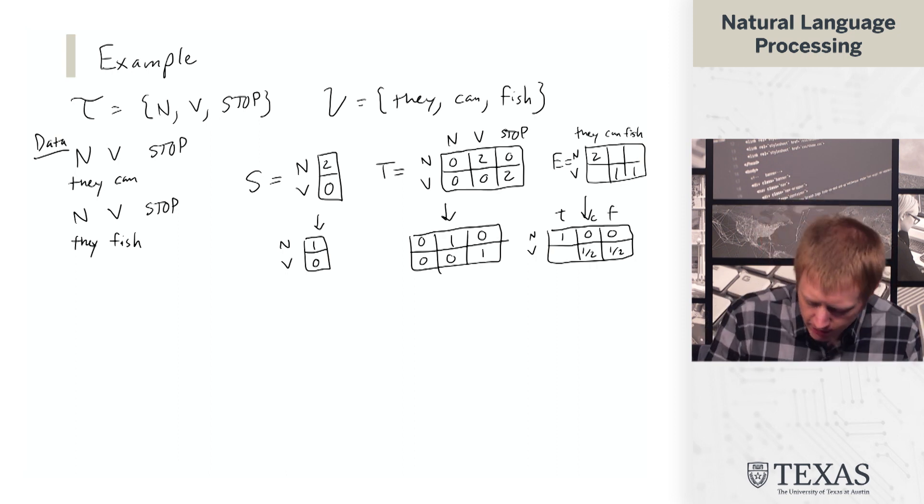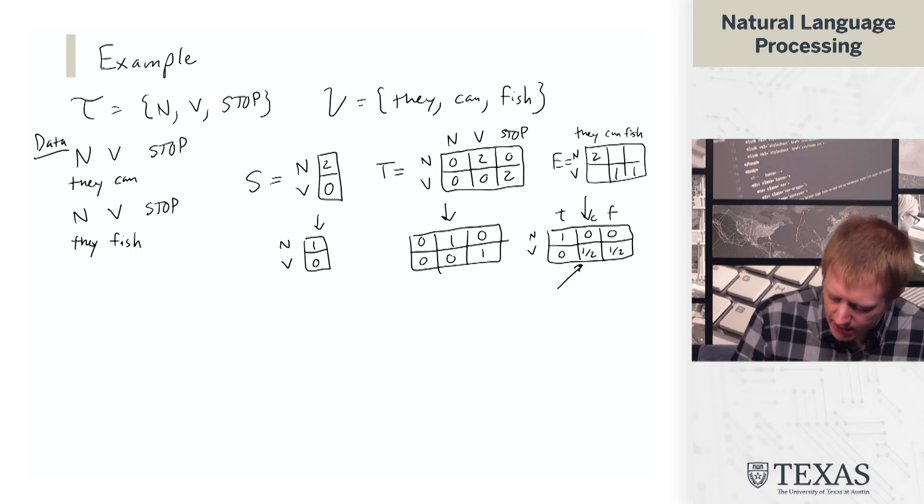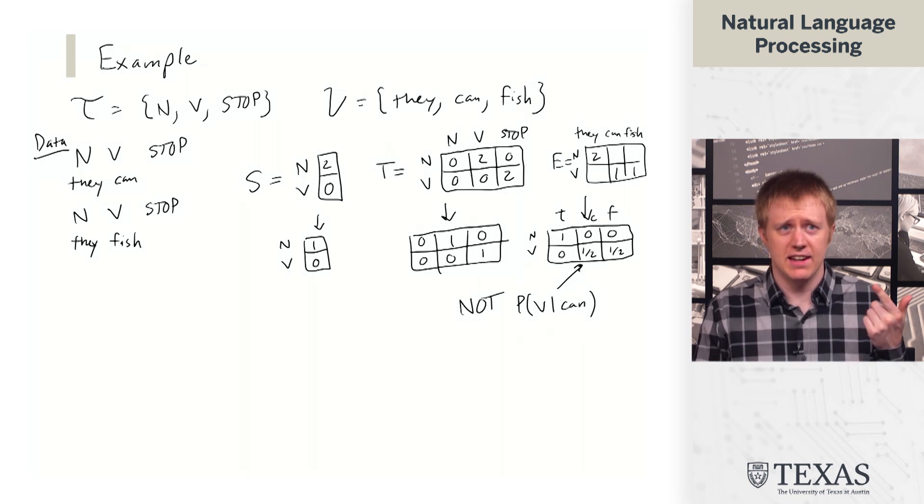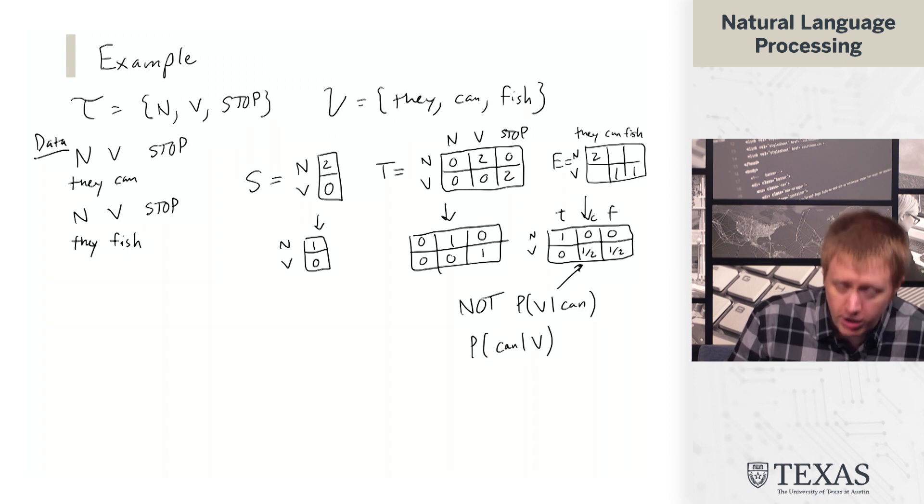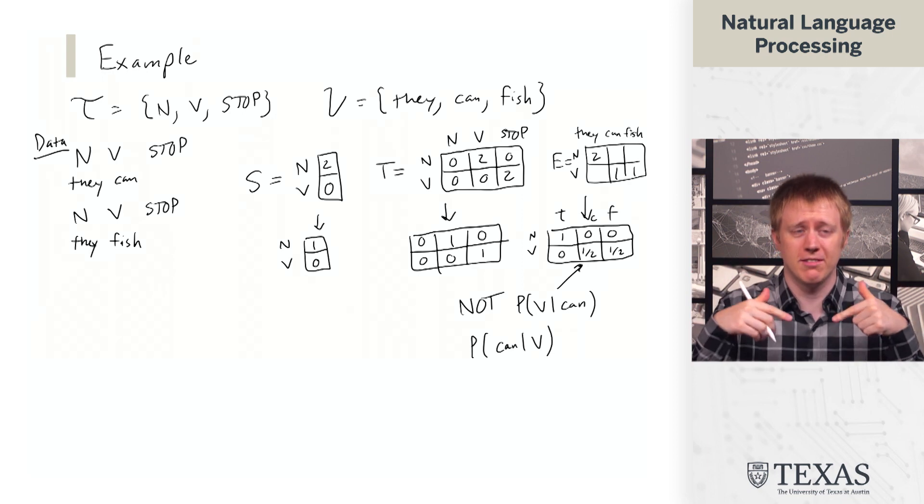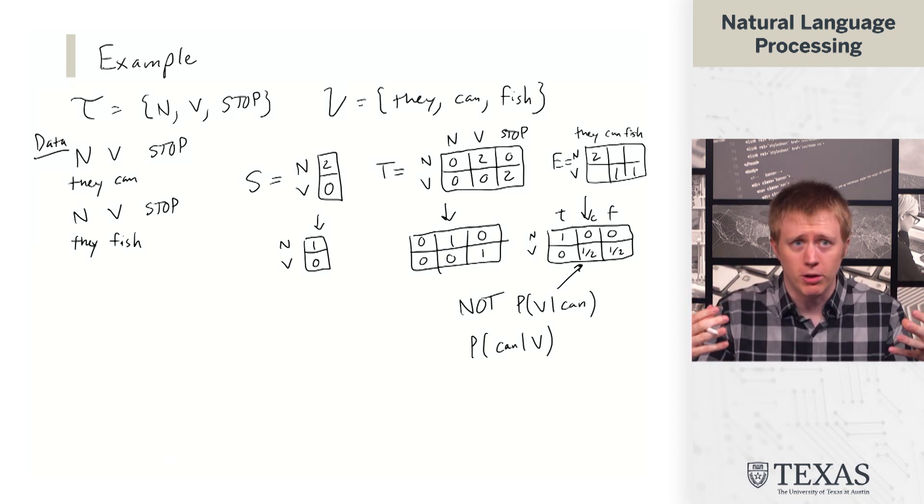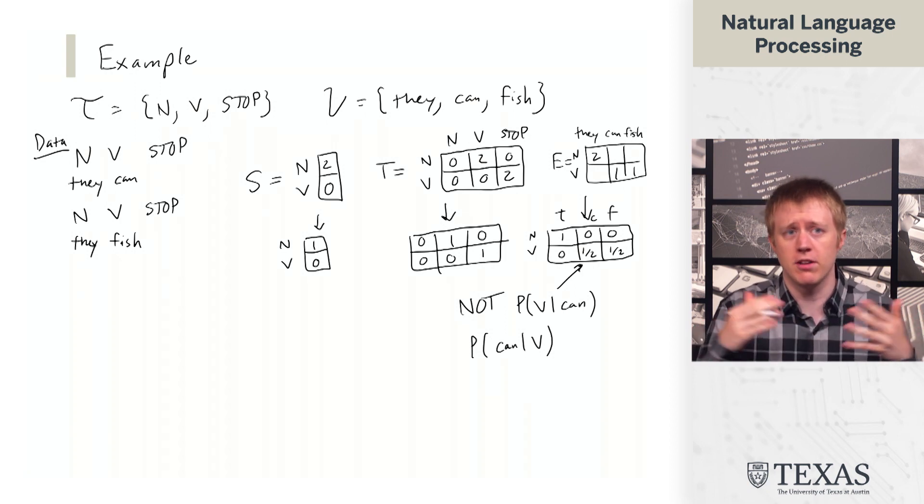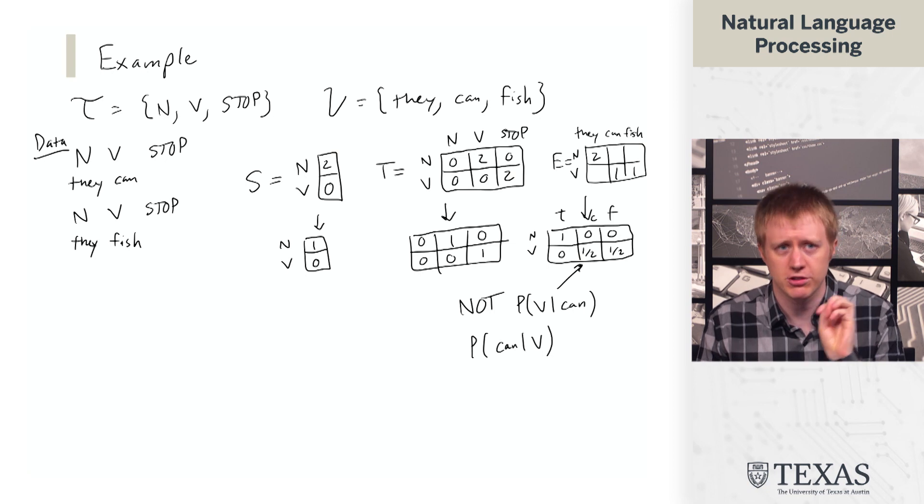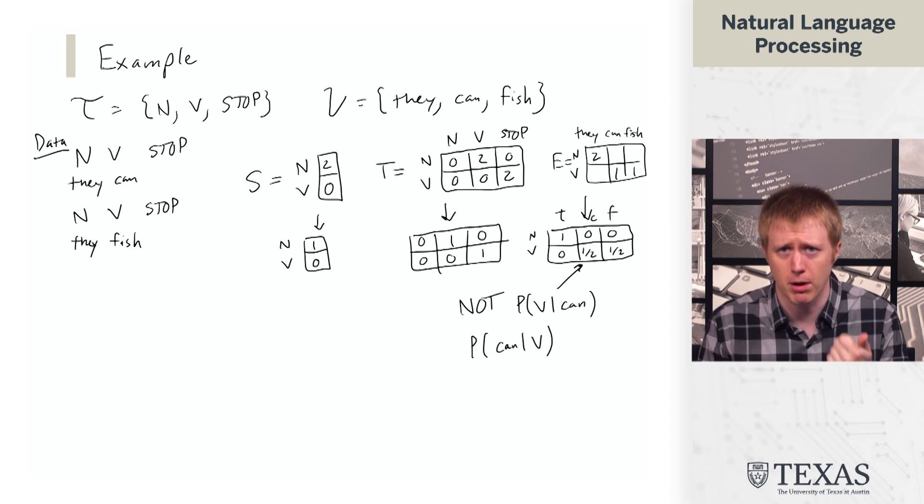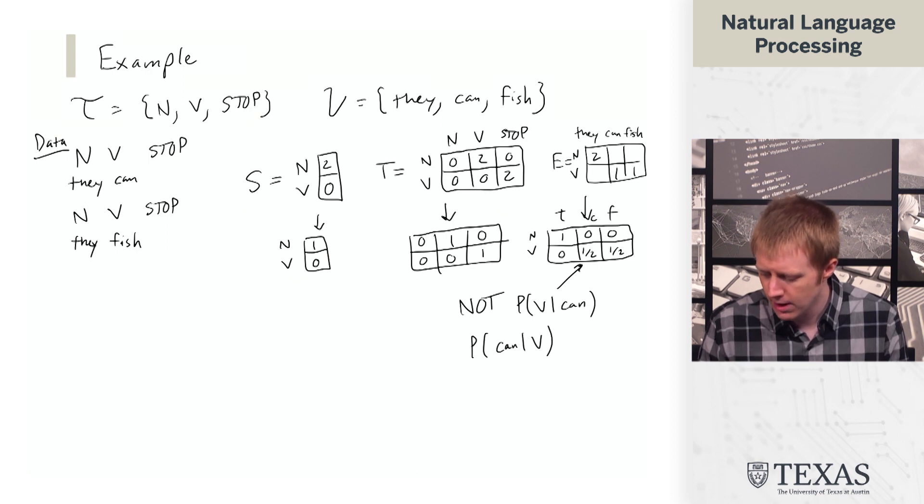So the thing to notice is that this one half is not the probability of verb given can or anything like that. It's not saying if we see can, what's the probability that it's a verb. It's the probability of can given verb. So it's like when we see verb, what is the distribution over possible verbs? And this is generally going to be some very large, very flat distribution where there's going to be a ton of possible things. They're all going to have like 1% probability or less. But it's very important to keep straight the direction that we're thinking about this probability distribution going in.